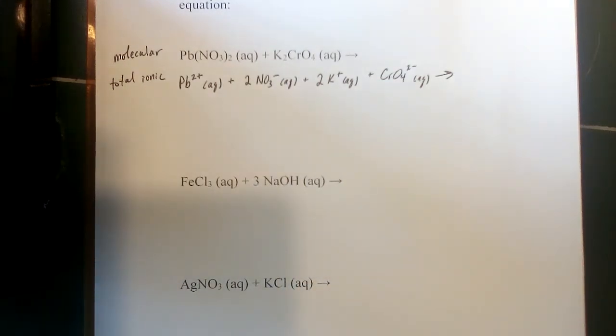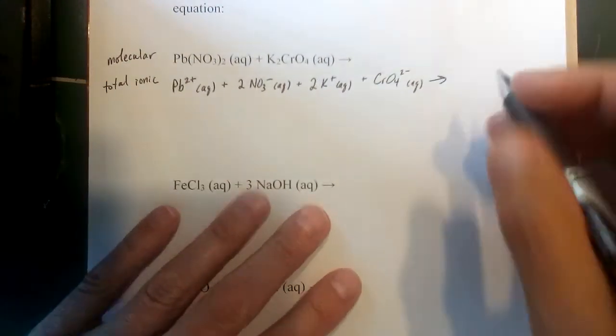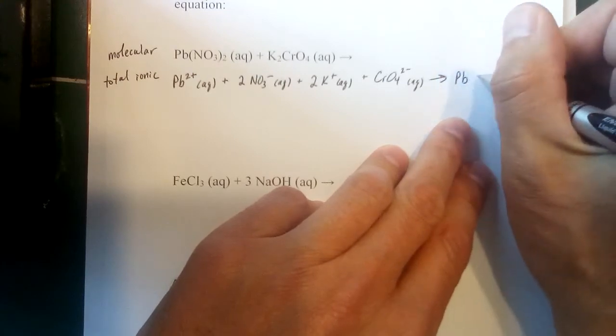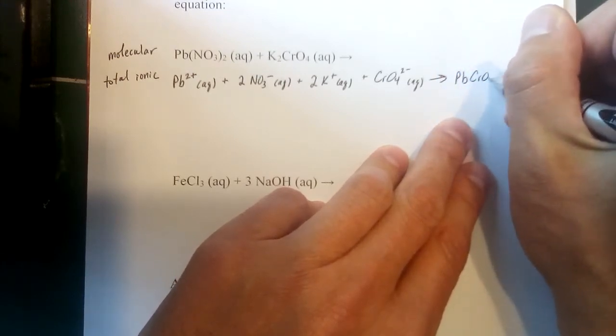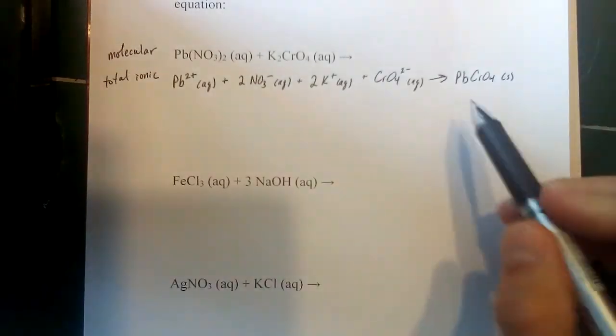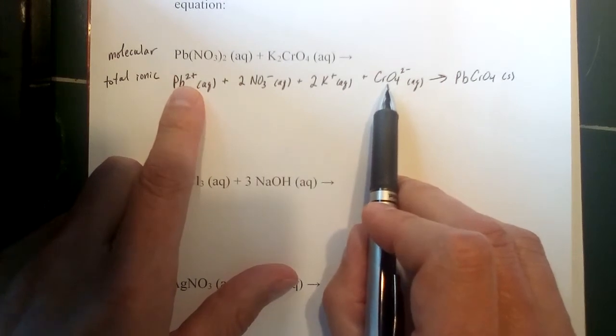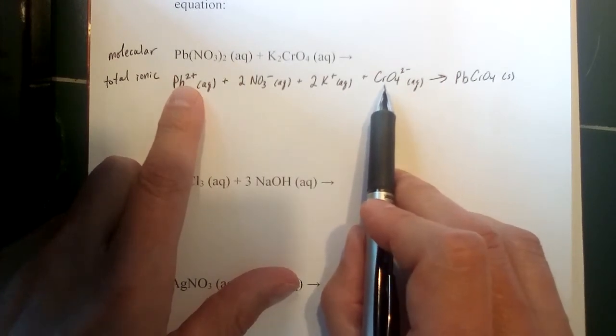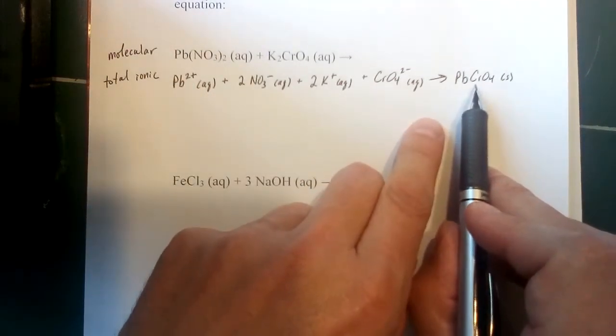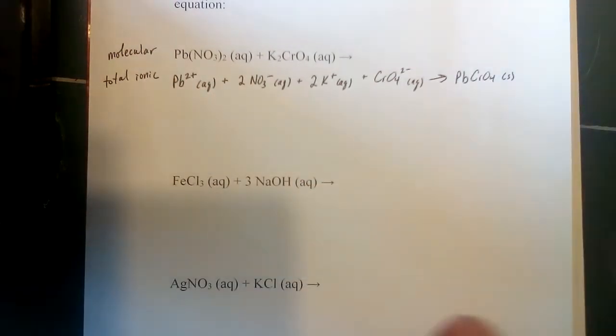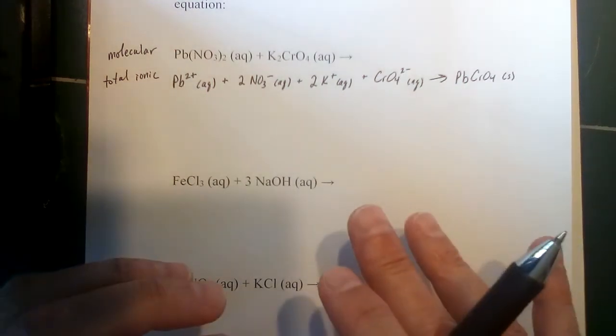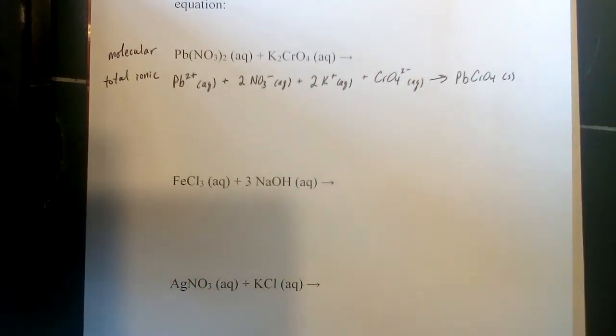So one of the products of our reaction is going to be lead chromate, and it is going to be a solid. Now we have to write it correctly here. You have to take into account the charges of the ions that you are evaluating here in the reaction and make sure you get the correct formula for that solid. All this stuff we talked about in chapter two - polyatomic ions, ionic compounds - super important here, because if you can't get the right formula here, you don't have the right reaction or the right description of what's going on.